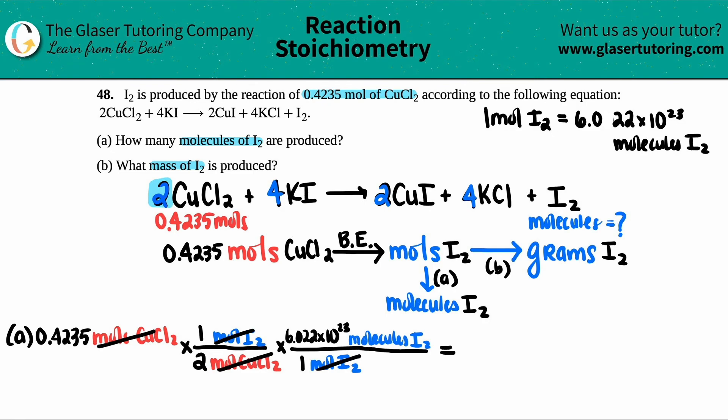And now, since I found out the answer, the unit molecules of I₂ is the unit that I want. So I just calculate anything in the denominator, you divide. So DD, anything in the numerator, you multiply. So I'm just going to take it from left to right. I'm going to say 0.4235, 0.4235 divided by two, because it's in the denominator, and then times 6.022 times 10 to the 23rd.